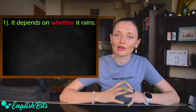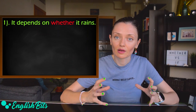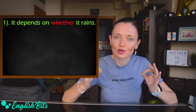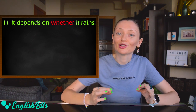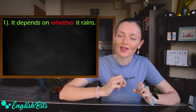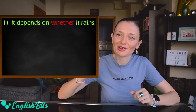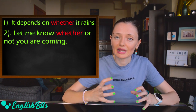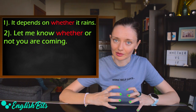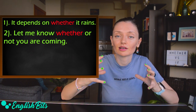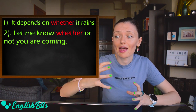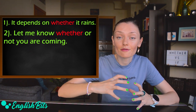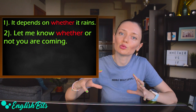Now I'm going to give you the correct answers. Number one: 'whether'. 'It depends on whether it rains.' We can only use 'whether' here because it goes after the preposition 'on'. Number two: the correct option is 'whether'. 'Let me know whether or not you're coming.' It's not correct to say 'if not' together. It would be fine if 'or not' went at the end of the sentence — for example, 'Let me know if you're coming or not' — but 'if not' together is not correct.